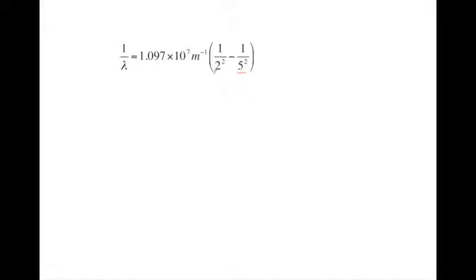1 over the wavelength equals our Rydberg constant times 1 over 2 squared, that's the shell it's falling to, minus 1 over 5 squared, where 5 is the shell it's falling from. And now we just have to begin to solve it.